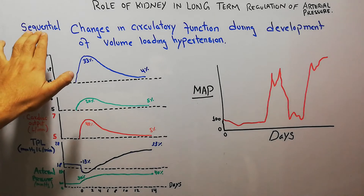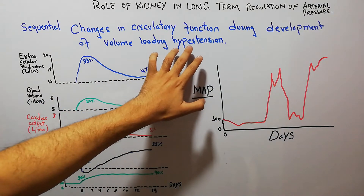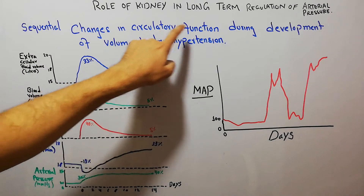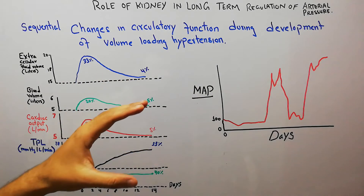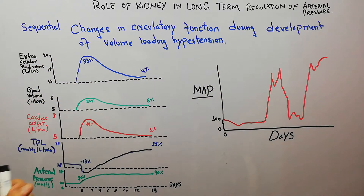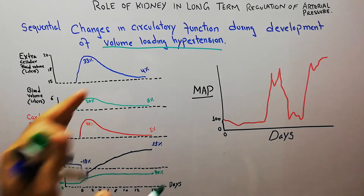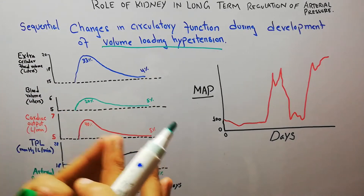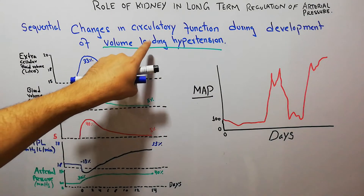Today in this lecture we are going to discuss the sequential changes in circulatory function during development of volume loading hypertension. Volume loading hypertension is simply high blood pressure due to loading of excess extracellular fluid. When the amount of extracellular fluid increases in the body and causes hypertension, it is basically volume loading hypertension.